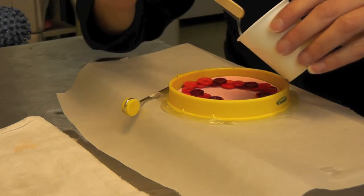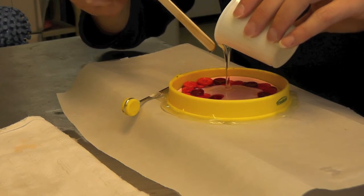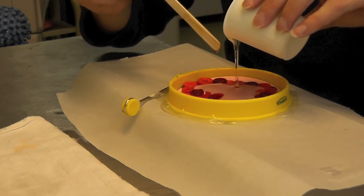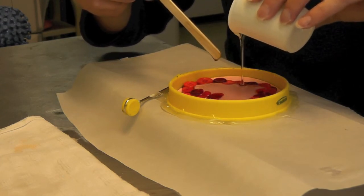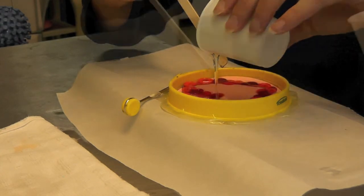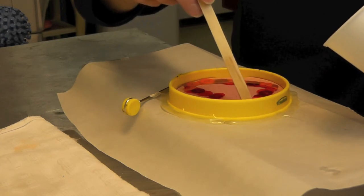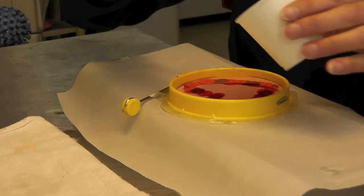All I'm going to do is pour the resin into the mold over the buttons, and then I'm going to let this sit for a few minutes and let the bubbles rise to the top.